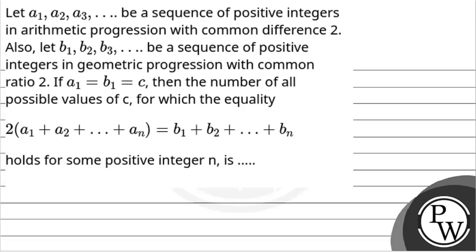Hello. Let's see the question. Let a1, a2, a3 be a sequence of positive integers in arithmetic progression with common difference 2. Also let b1, b2, b3 be a sequence of positive integers in geometric progression with common ratio 2. If a1 equals b1 equals c, then the number of all possible values of c for which the equality 2(a1+a2+...+an) equals b1+b2+...+bn holds for some positive integer n is what?